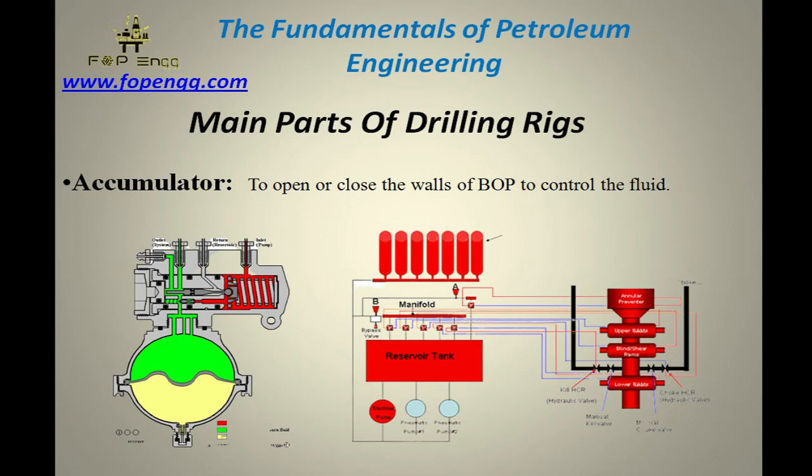First of all, the accumulator. The accumulator is basically used to open or close the valves of the BOP. As many of you know, BOP stands for blowout preventer — it is basically used to control the fluid. The accumulator is installed to control the valves of the BOP. There are three rams of the BOP which I will cover in the next topic.